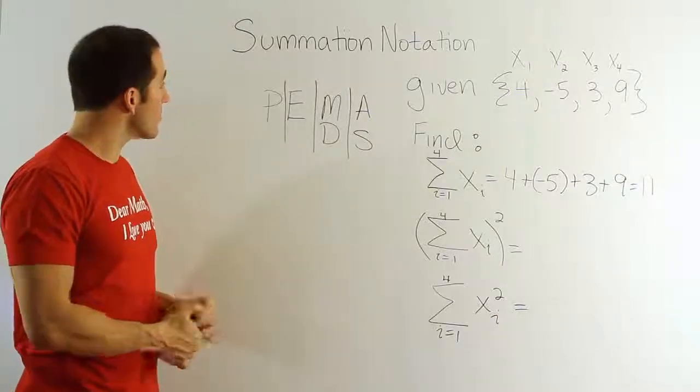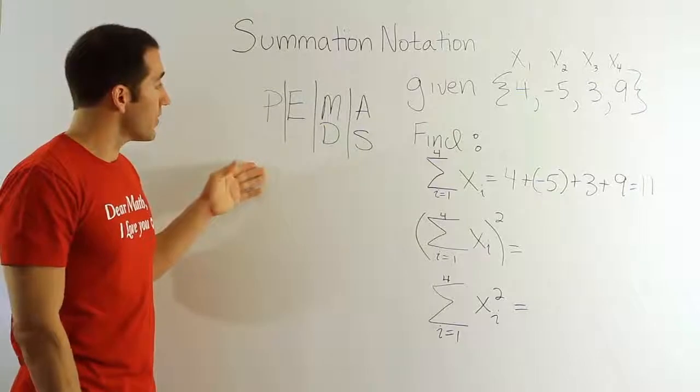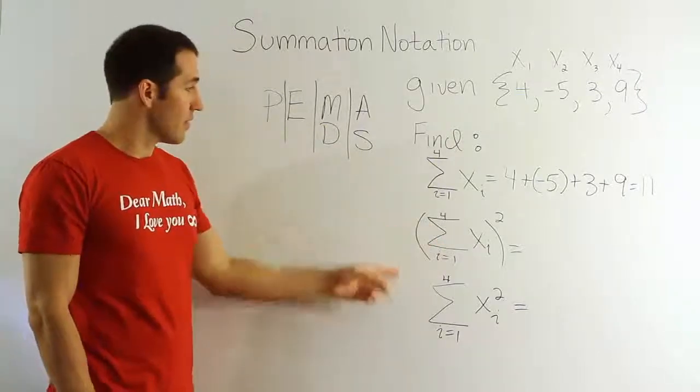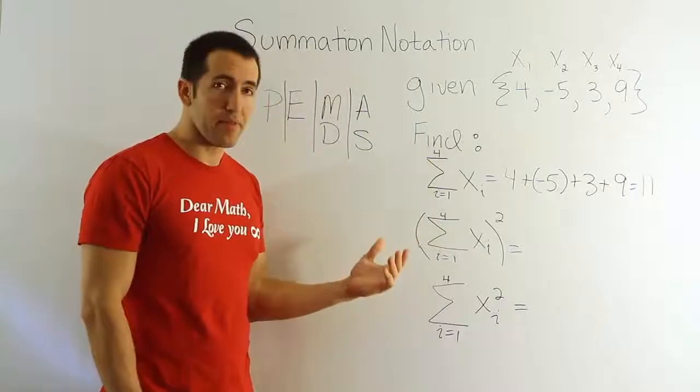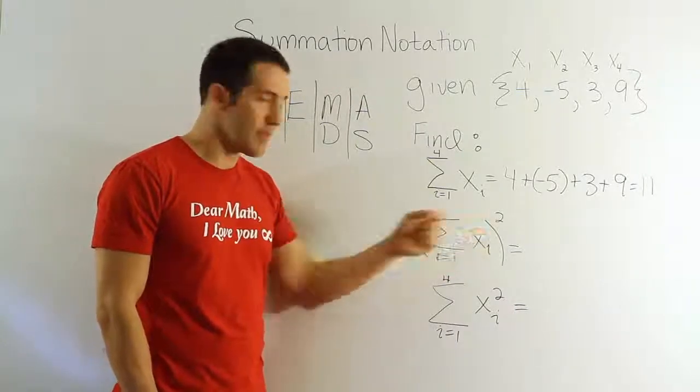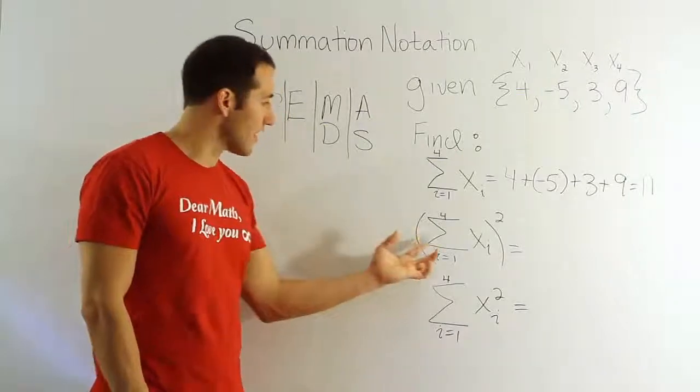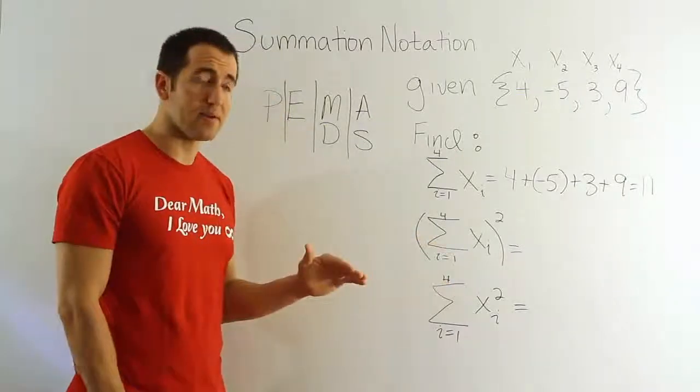With this order of operations, we can figure out how to evaluate things like this. When I look at this, I'd say it involves a couple of things - we have summation, we have a parenthesis, and we have exponents. Well, parenthesis goes first. Parenthesis tells us to do whatever's inside the parenthesis before doing anything else.